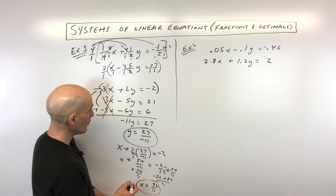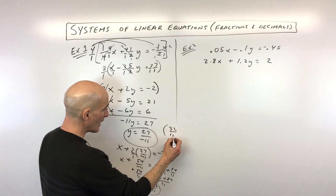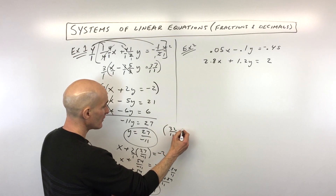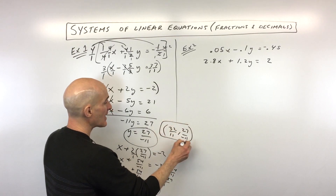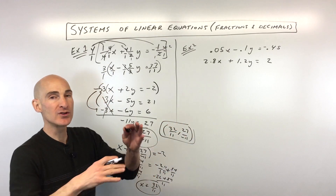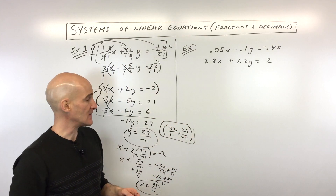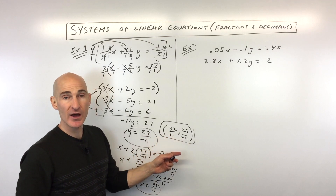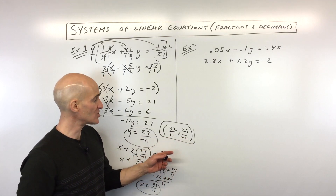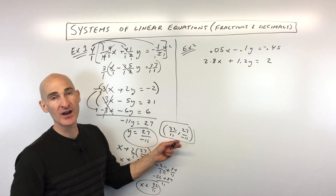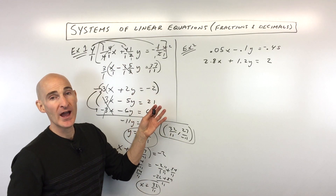So now we can see our final answer written as a coordinate — x comma y. We have 32 over 11, negative 27 over 11. That's the point or coordinate where the two lines would cross if you were to graph both of these lines. You can turn these into mixed numbers or decimals if you want an approximation, but we'll leave it like that for right now. So that's how you would work with fractions.